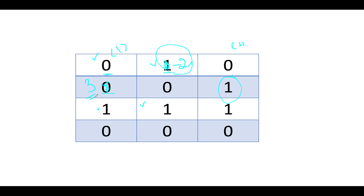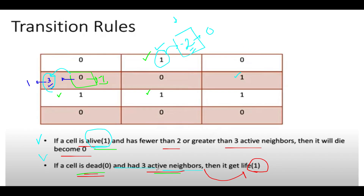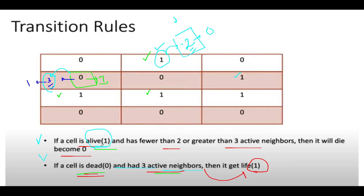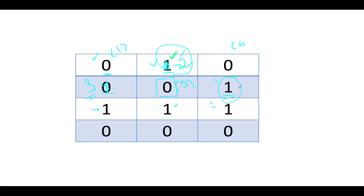Positive sign means eventually it will get active or alive in nature. Next we see zero — counting active neighbors: one, two, three, four, and five. This has five active neighbors, so it will not be updated because we are looking for only three active neighbors. Next we see one, and counting active neighbors: one, two, and three. If a cell is alive and has greater than three, it will become negative — but this condition is not met, so the state remains as it is.